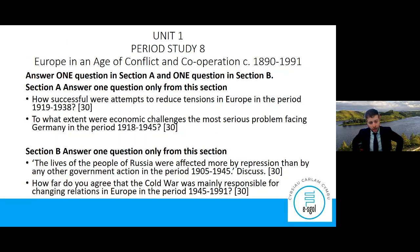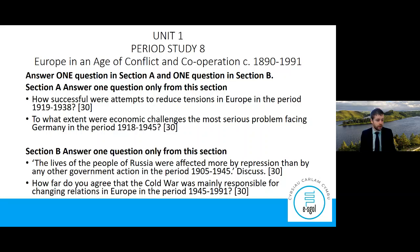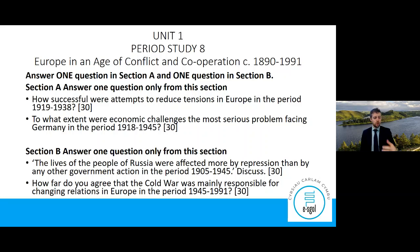If you were doing an exam — obviously you're not doing an exam this year — but your teachers and lecturers may be using past papers as part of that evidence gathering. They would look like this: Unit 1 and then the period option you follow. You'd have section A with two questions to choose from, and section B with two questions to choose from, and you'd submit two 30-mark essays.